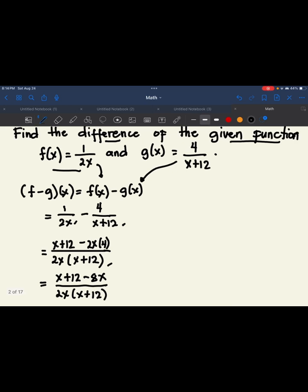we need to simplify. When we simplify, we have x minus 8x that is negative 7x plus 12 over the denominator that is 2x times x plus 12.